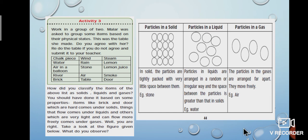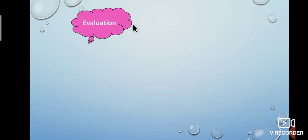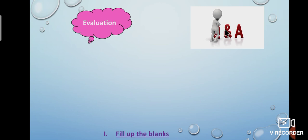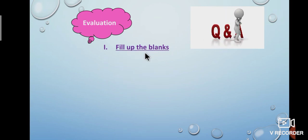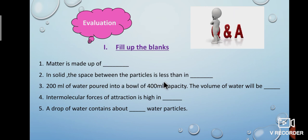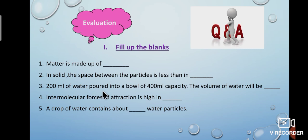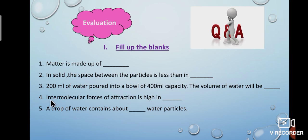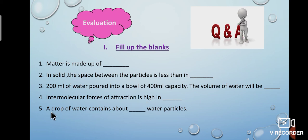I hope you understand about matter and states of matter. This is the time for evaluation. Be ready. First, fill in the blanks. Number 1: Matter is made up of dash. Number 2: In solid, the space between the particles is less than in dash. Number 3: 200 ml of water poured into a bowl of 400 ml capacity — the volume of water will be dash. Number 4: Intermolecular forces of attraction is high in dash. Number 5: A drop of water contains about dash water particles.